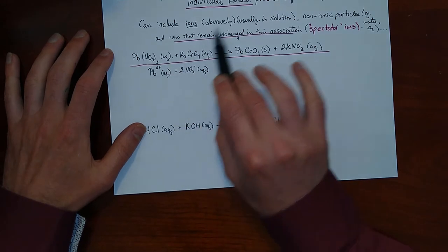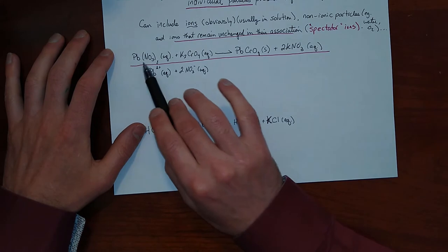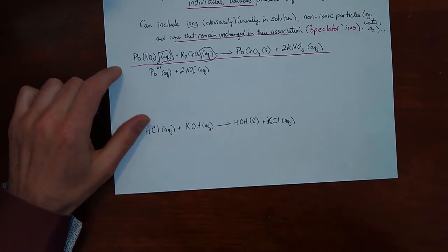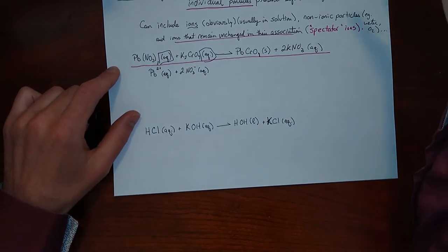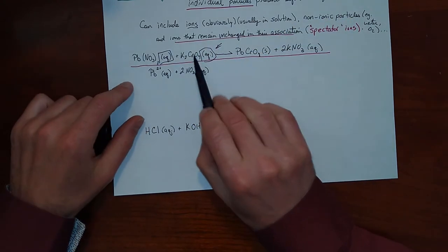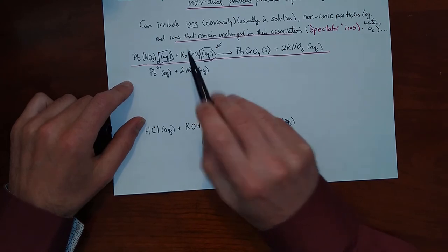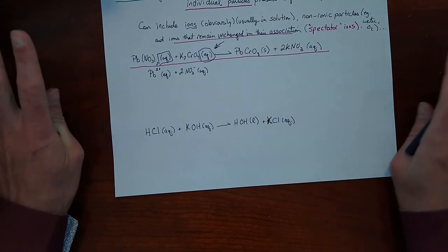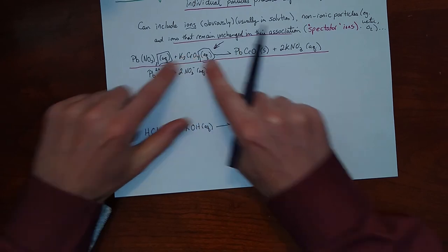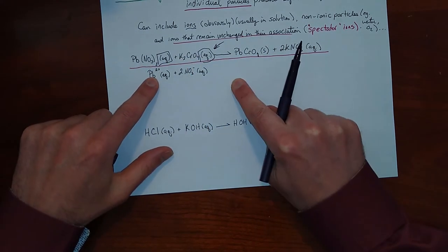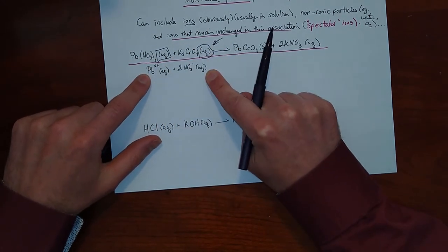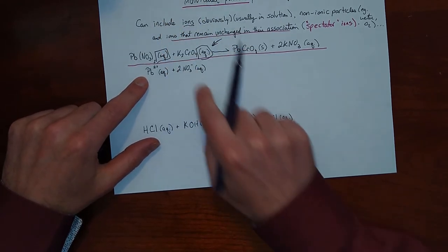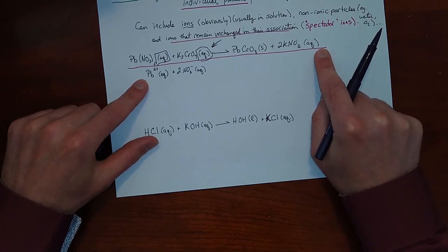The ionic form of this equation represents all of the individual particles rather than just the ionic compounds. This only applies where you have these substances in solution — when you see 'aq', that tells you that what's going on in reality is not that potassium and chromate are truly associated with one another. Because they're in aqueous solution, they're actually separately associated with individual groups of water molecules — you have potassium ions, chromate ions, lead ions, and nitrate ions each in the water, not really bonded to one another. The ionic equation represents this reality.